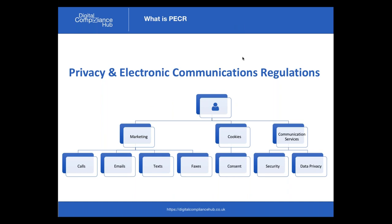Moving on to privacy. In the UK we have the Privacy and Electronic Communication Regulations, or PECA. These cover three main things: rules around electronic marketing — telephone, email, texts and faxes; rules around cookies; and rules for operators of electronic communication services around security and privacy. These don't overrule data protection — they complement it — and they set out specific rules for marketing and cookie use.